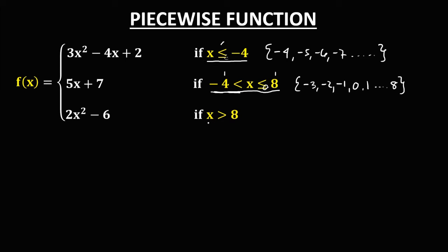For the third condition, x is greater than 8. So these are the set of numbers greater than 8 — we have 9, 10, 11, 12, and so on. These are the different sets of numbers under these different conditions.